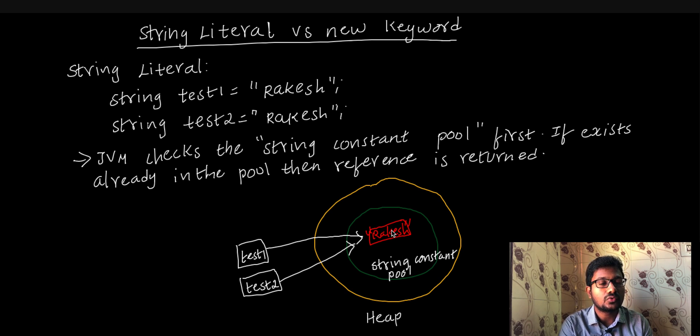That string constant pool memory is here. The remaining part of memory is called some other partitions. Then there is a common pool space. What is common pool space?